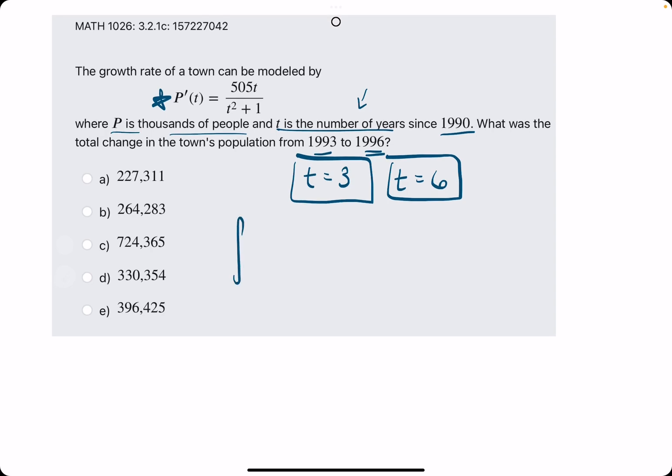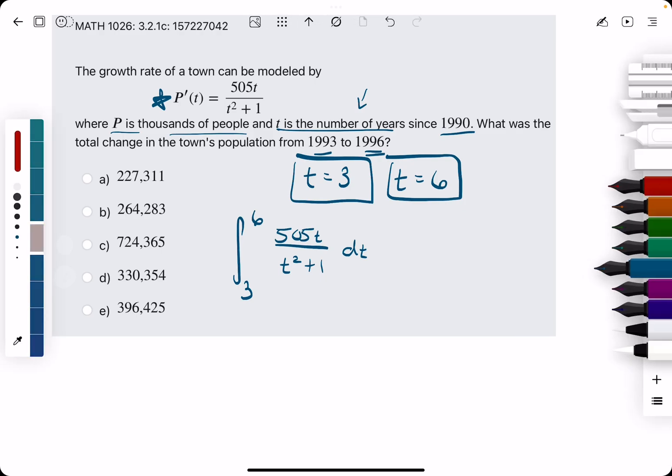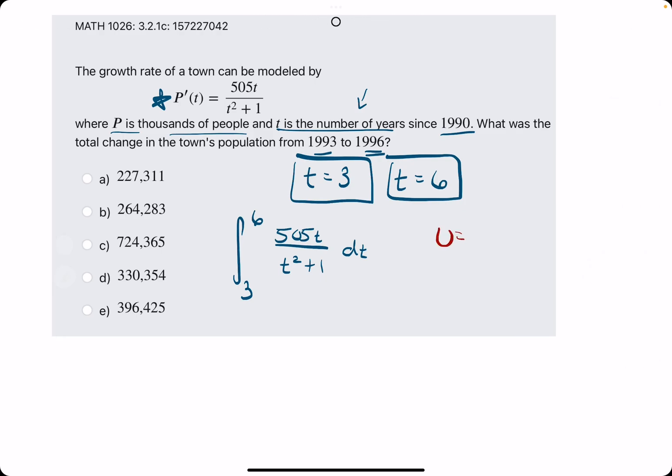So we are finding the integral from 3 to 6 of P', so 505T over T squared plus 1, DT. I hope you did not forget U-substitution because that is what we will be using here. In this case, the higher exponent expression, the T squared, will play into identifying our U.